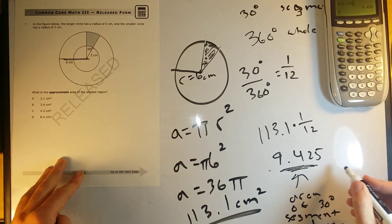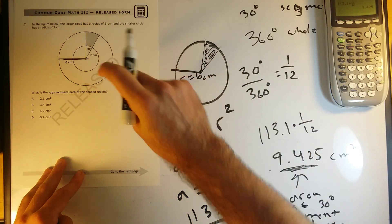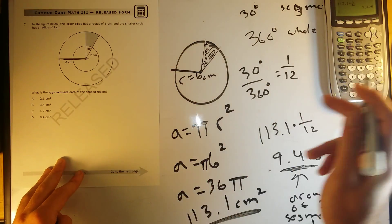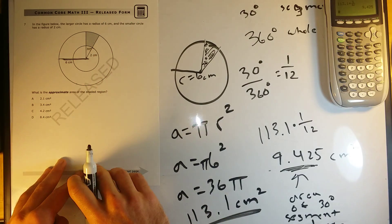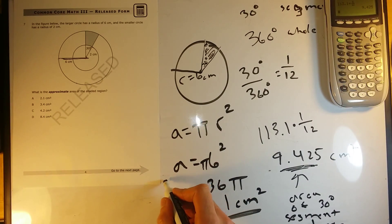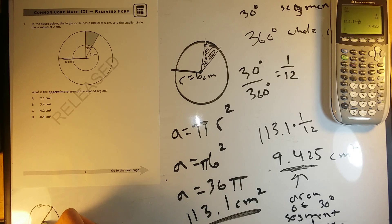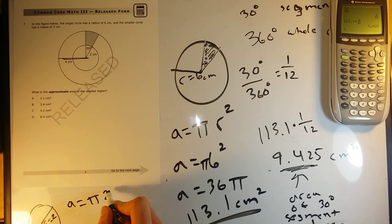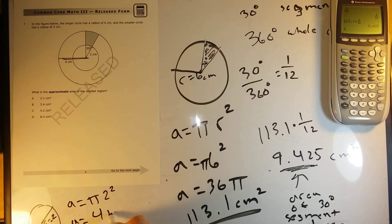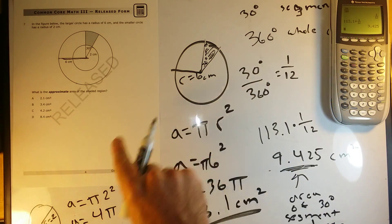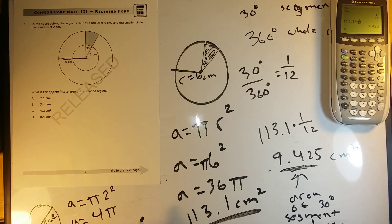We need to then take that whole area and subtract from it the area of the little small segment. So now let's figure out how much that little small segment would be. For our small circle with a radius of 2, the area would be pi times r squared, so pi times 2 squared — area equals 4 pi. And again, it's just 30 degrees of that, so it's going to be 1/12 of 4 pi.